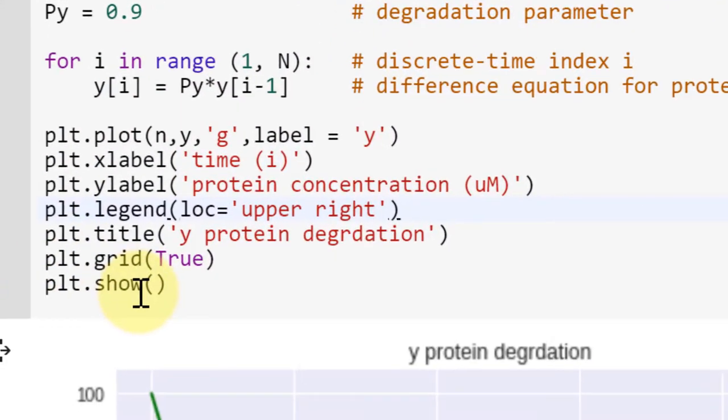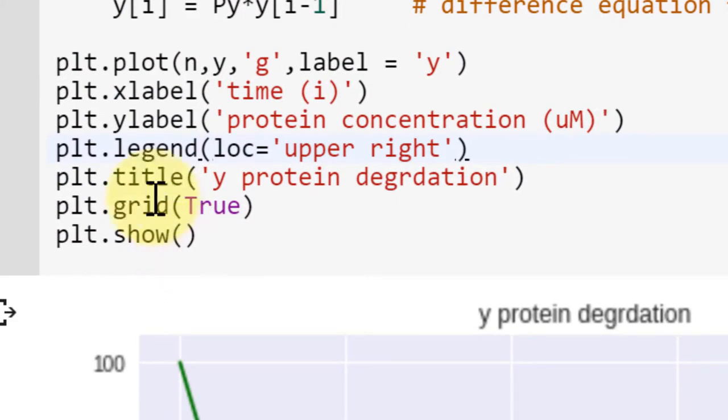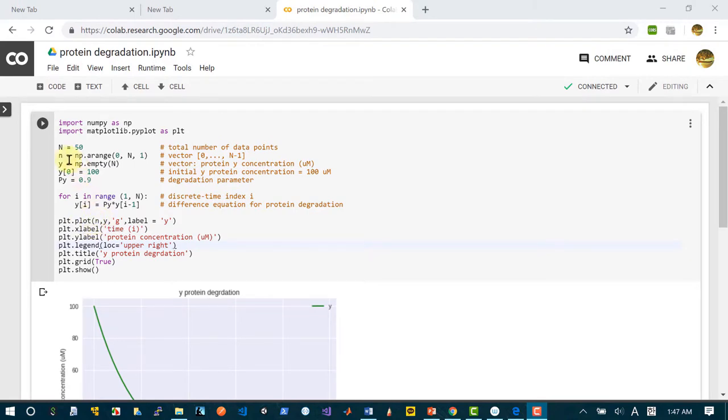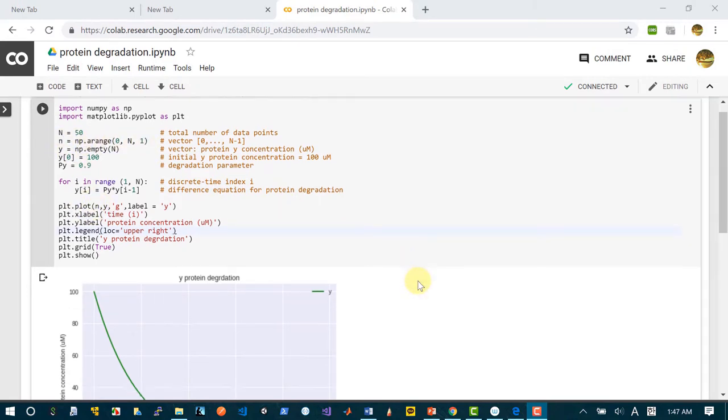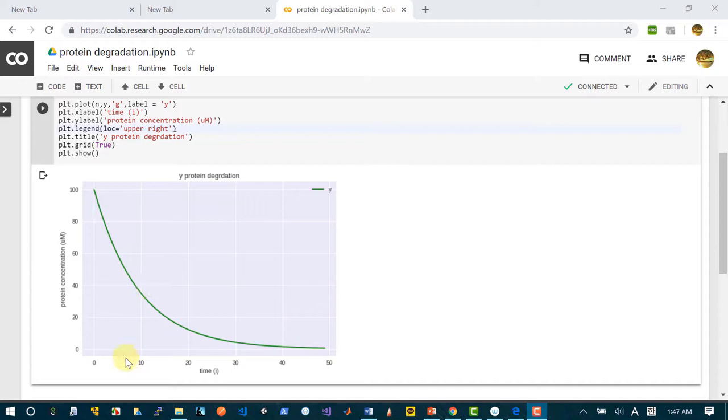We have some lines for plotting the result. So plt dot plot small n which is this vector. So basically I have the plot here. And small n goes from 0 to 49.